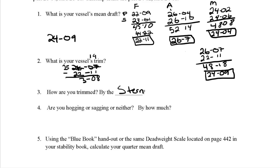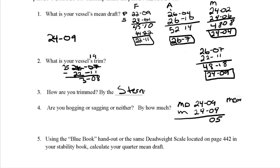Next, we determine if the vessel is hogging or sagging. We compare the mean draft (24.09) to the midships draft (24.04) — a difference of 5 inches. If the mean is more than the midships draft, you're hogging. Since the mean draft is greater here, this vessel is hogging by 5 inches.